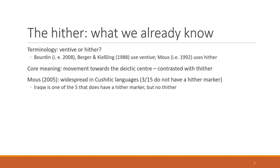Still, there is a core meaning of movement towards the deictic center. In this way, the hither is often contrasted to the thither, which is movement away from the deictic center. The hither is a widely known phenomenon across languages — we also see it in Cushitic languages. In 2005, Maus looked at 15 Cushitic languages and found that only three do not have a hither marker. Interestingly, Iraqw is one of the five that does have a hither marker but no thither, so you won't hear me talk about the thither again.